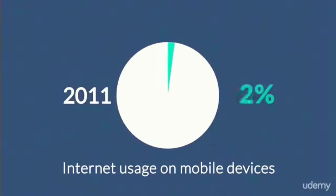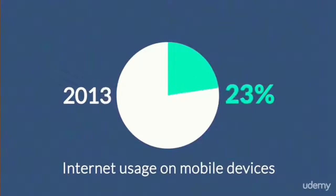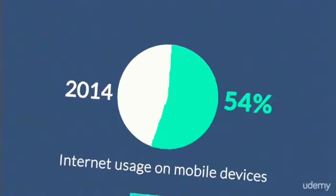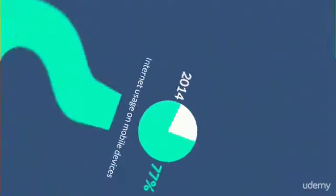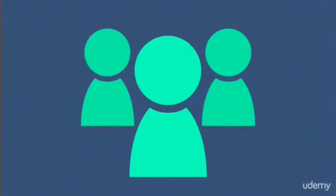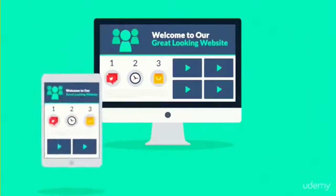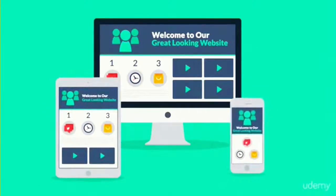In 2011, mobile browsing took a share of about 11%. In 2013, it was near 25%. And 2014 was the first year mobile exceeded desktop Internet usage. So what does all this mean to you? It means that if you don't want to lose any potential clients, then you need a great-looking website which is also optimized for mobile browsing.